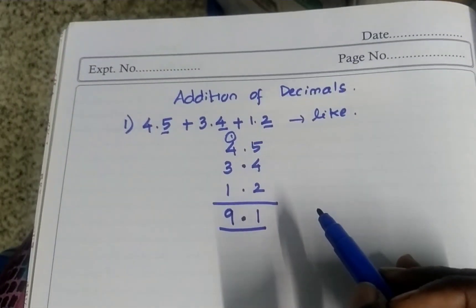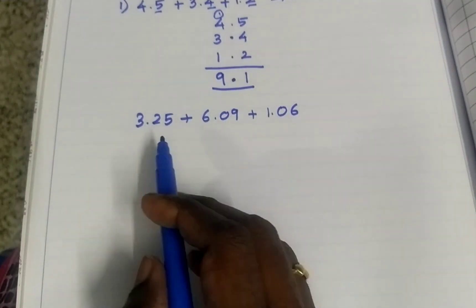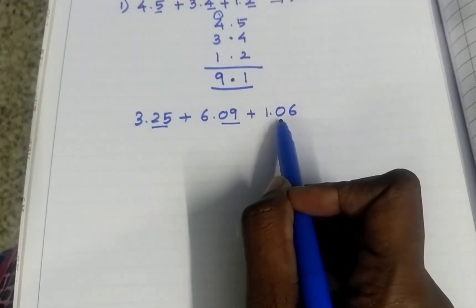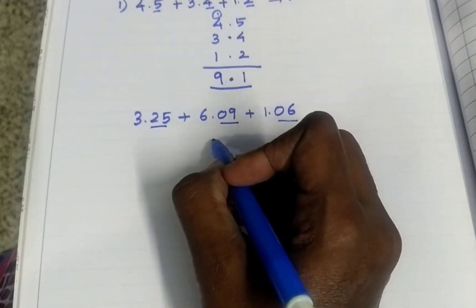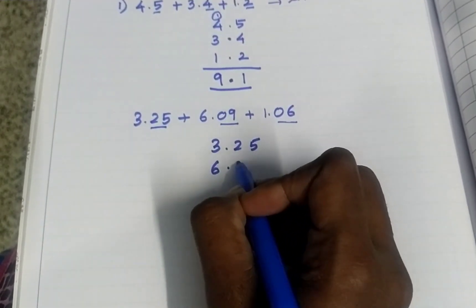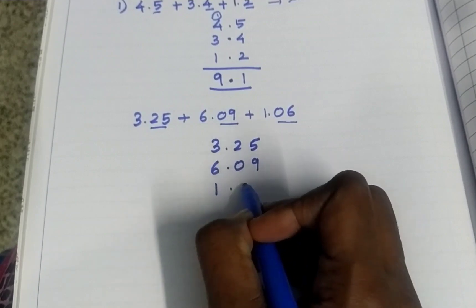One more sum I will show you. Now you can see these are all like decimals because after the point, two digits. After the point, two digits. After the point, two digits. So same like that. First to write, 3.25. Then 6.09. Point should be straight.